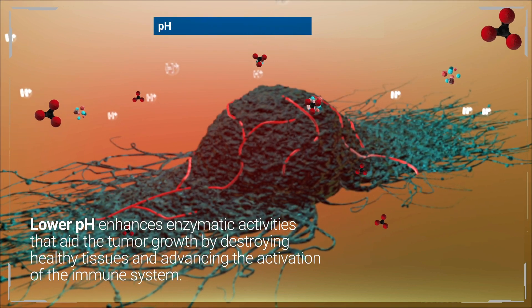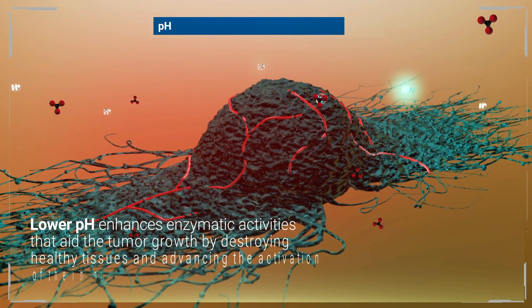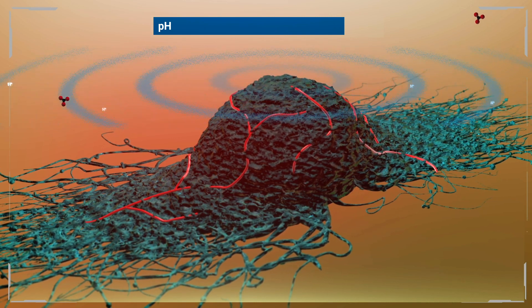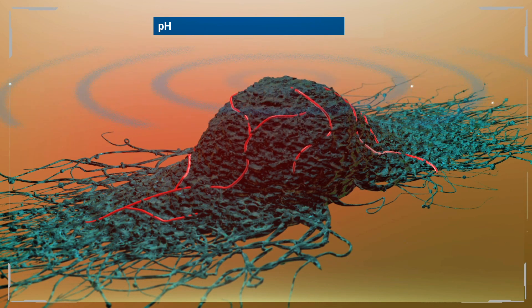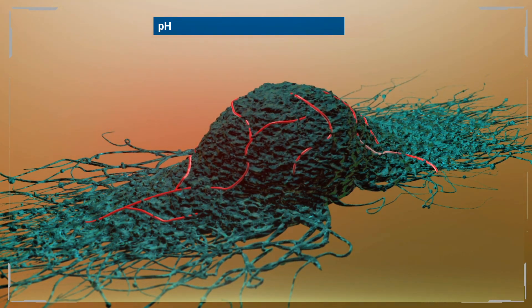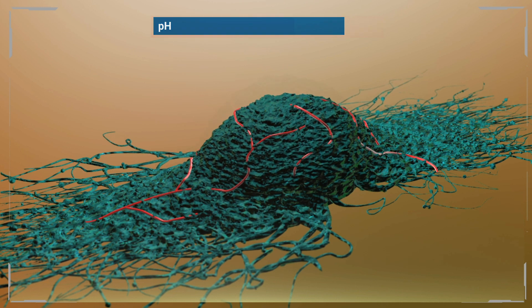This pH modulation by ACC nanoparticles causes cancer cells to shift their metabolism towards oxidative phosphorylation, reduces tumors' growth rates, reduces invasion and metastatic capabilities, and enhances the immune system's ability to defeat the tumor.